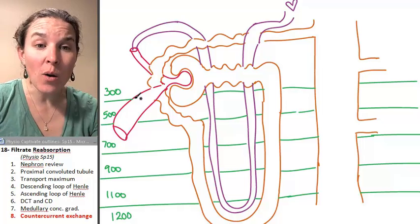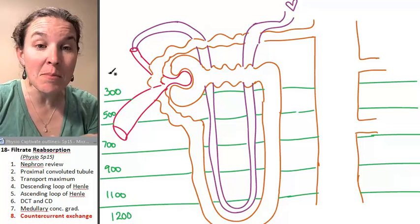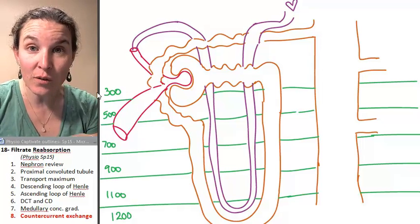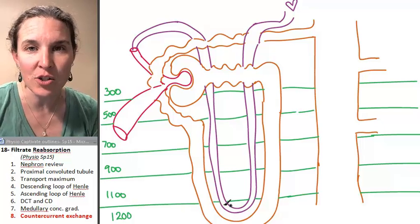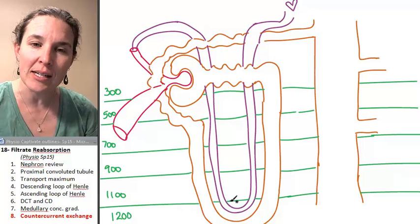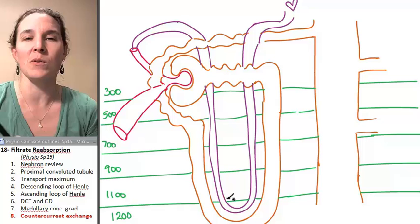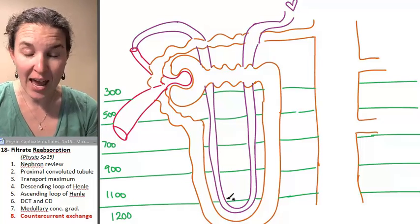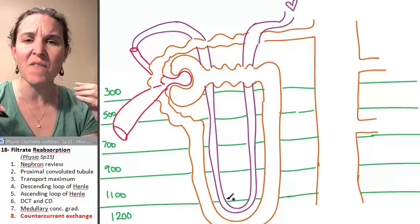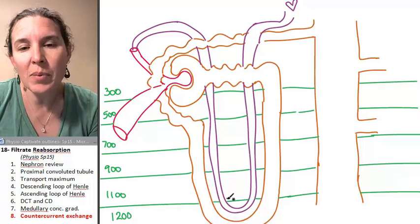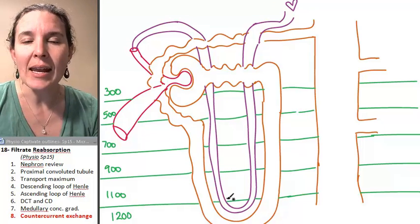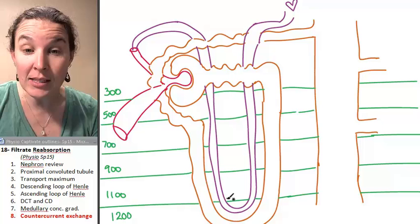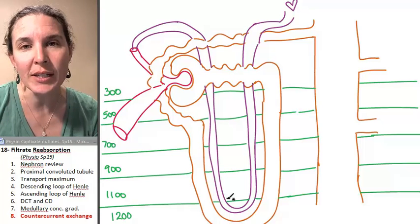Okay, we know that in the interstitial fluid we've got this crazy concentration gradient. And the question is, as we're moving solutes in and out and as we're moving water in and out and changing the concentrations of the filtrate, how do we pick that up in the bloodstream? And it has to do with this amazing setup called a counter current exchanger.